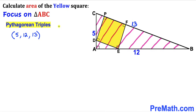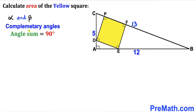Instead of using the Pythagorean theorem, we could have used Pythagorean triplets: 5, 12, and 13. If we have the numbers 5 and 12, then our longest leg is going to be 13. Here's our next step: let's assume that alpha and beta are our two complementary angles. In other words, the sum alpha plus beta must equal 90 degrees. Let's assume that this angle is alpha.